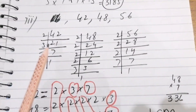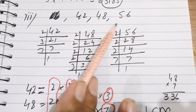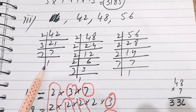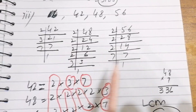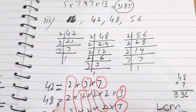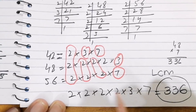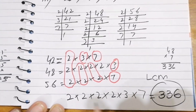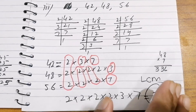The third part has numbers 42, 48, and 56. We find the prime factors of 42, 48, and 56 separately. Writing these prime factors in sequence, we take common and non-common numbers and multiply all together to get 336 as the answer.